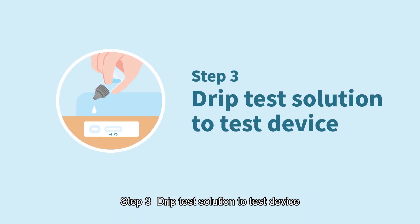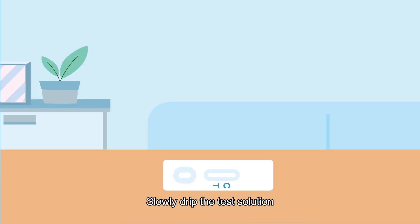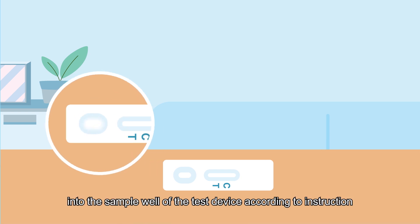Step 3. Drip Test Solution to Test Device. Slowly drip the test solution into the sample well of the test device according to instruction.